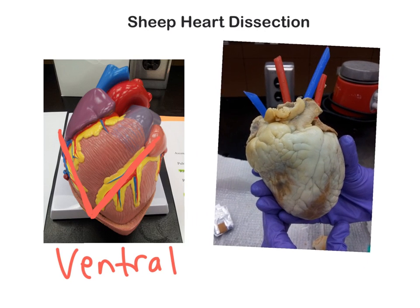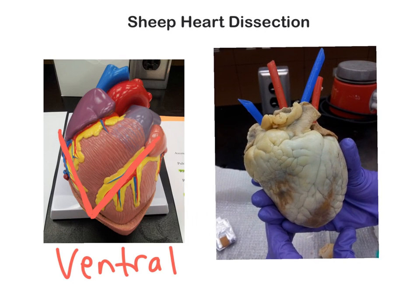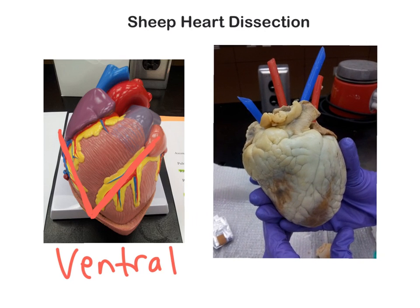Here is the actual heart, and let's take a look and see if we can see that V. There it is right there — the anterior interventricular branch of the left coronary artery, and there is the V. So V is for ventral; now we know which is the anterior surface of this heart.